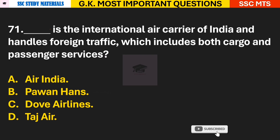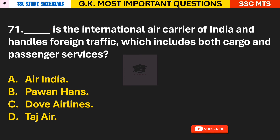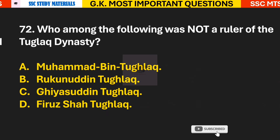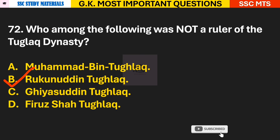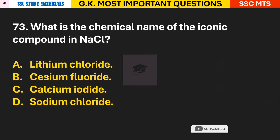Question 70: Which of the following festivals is associated with Rajasthan? Answer B — Bundi Utsav is associated with Rajasthan. Question 71: Which is the international air carrier of India that handles foreign traffic including both cargo and passenger services? Answer A — Air India. Question 72: Who among the following was not a ruler of the Tughlaq dynasty? Answer B — Ruknuddin Tughlaq is not a ruler of the Tughlaq dynasty.